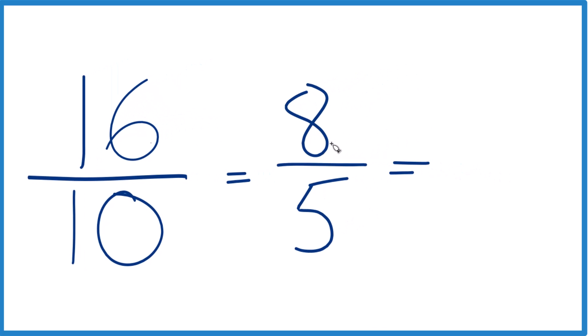5 goes into 8, let's see, 1 times 5 is 5, then we'd have 3 left over, bring the 5 across.